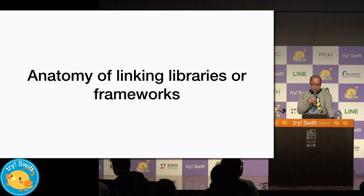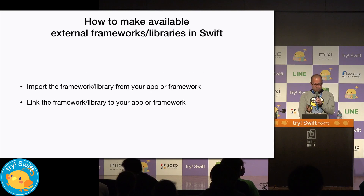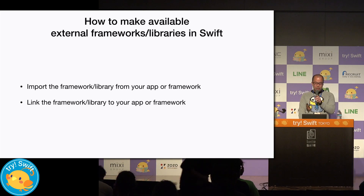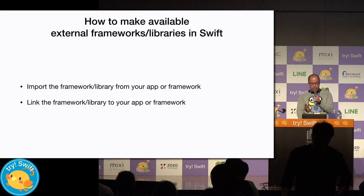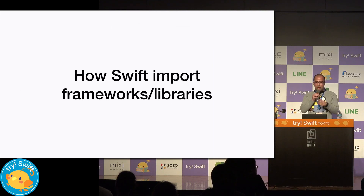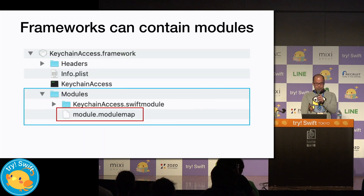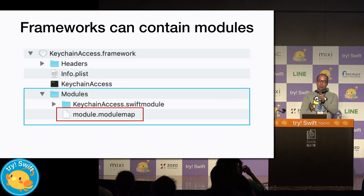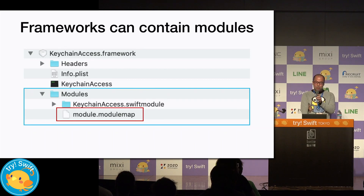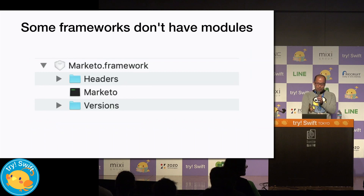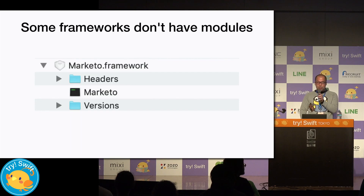From now on, I will explain what is happening while Swift links the framework. There are two processes for making external frameworks available to a Swift project. First, let's talk about the mechanism of import. What do we need to import the library in the Swift project? It is a module. Modules are defined as a module map. Module map converts headers to modules. Frameworks have bundles, and a bundle can contain modules. Most frameworks contain modules by default. Some frameworks don't have modules — the failing example I mentioned before is because the framework does not contain any modules.